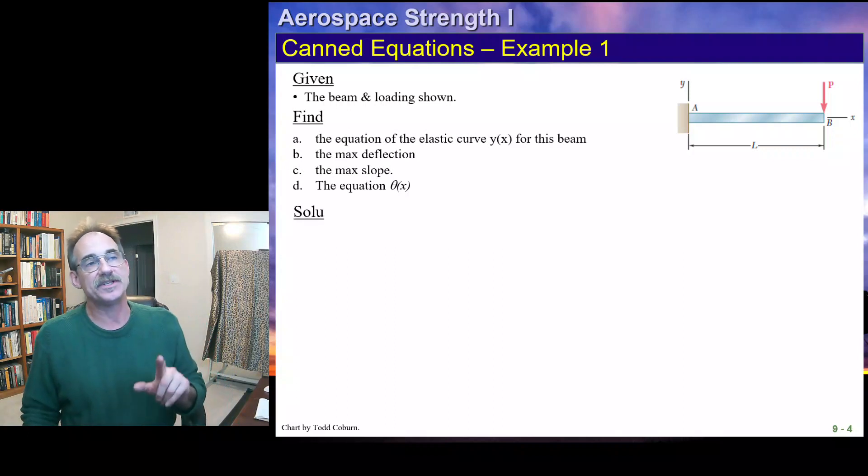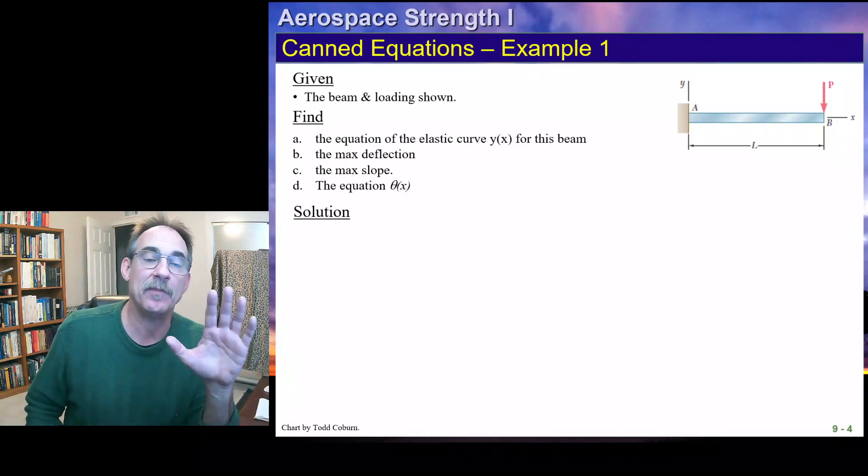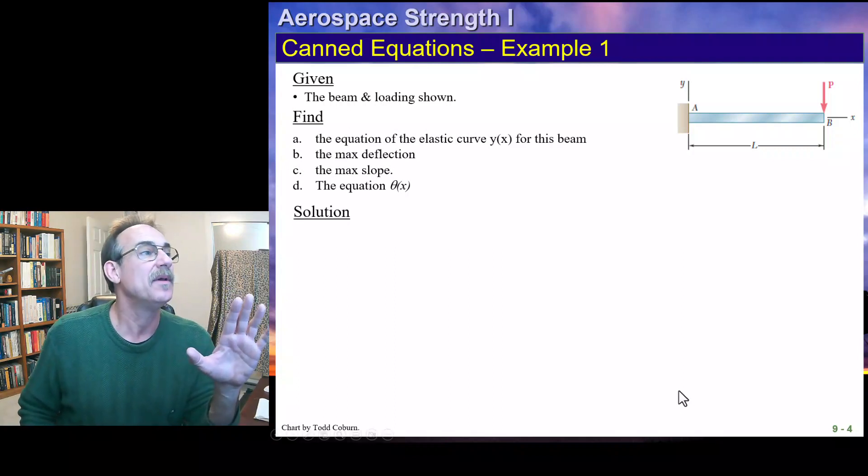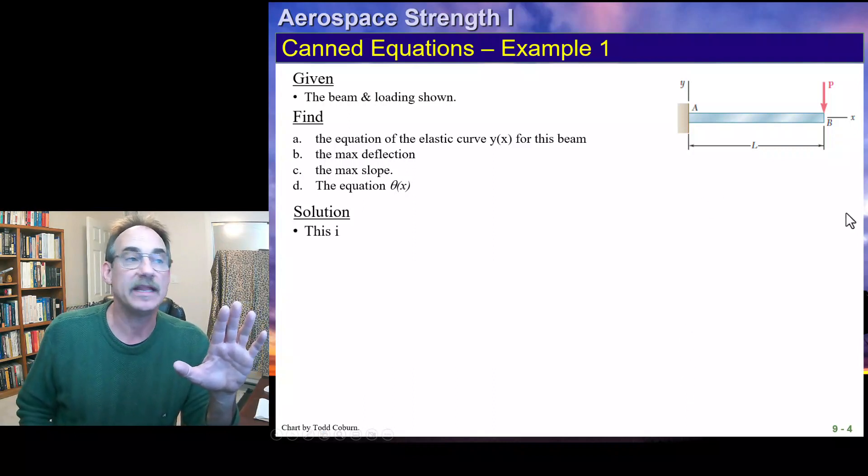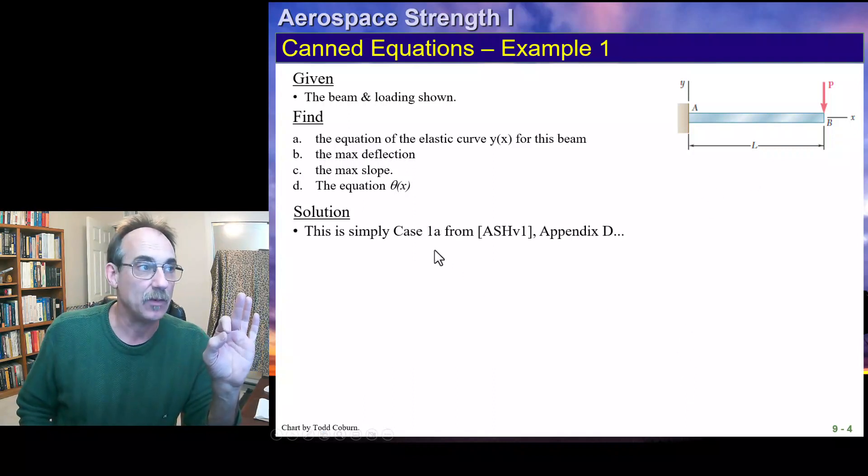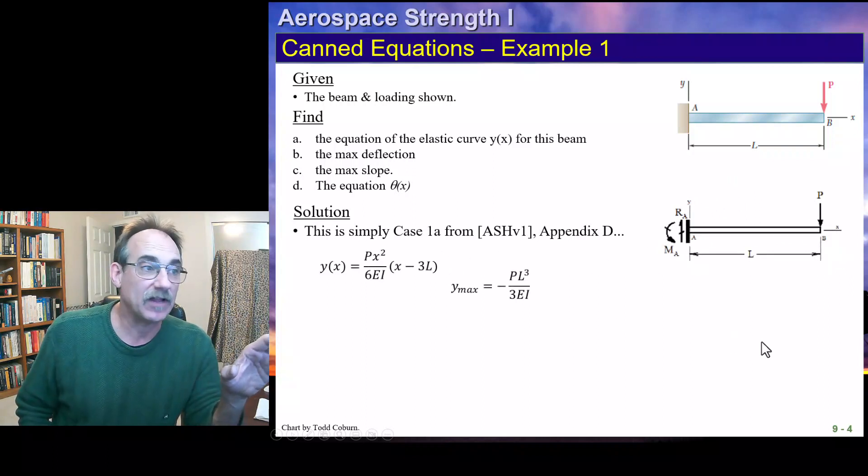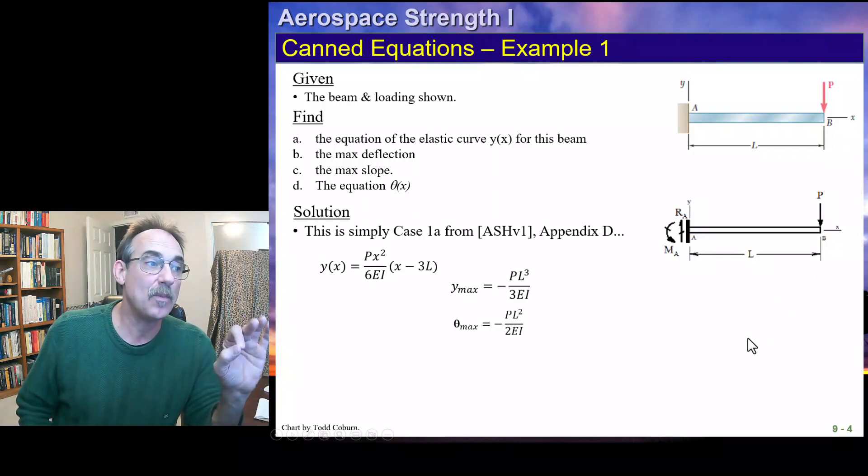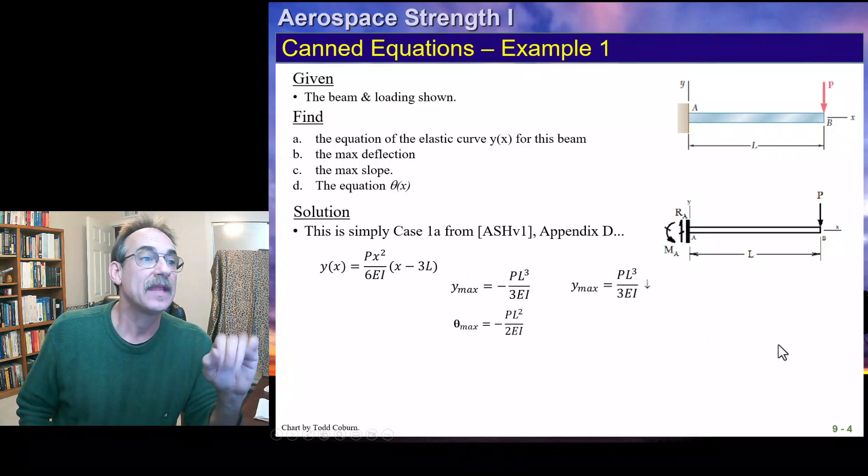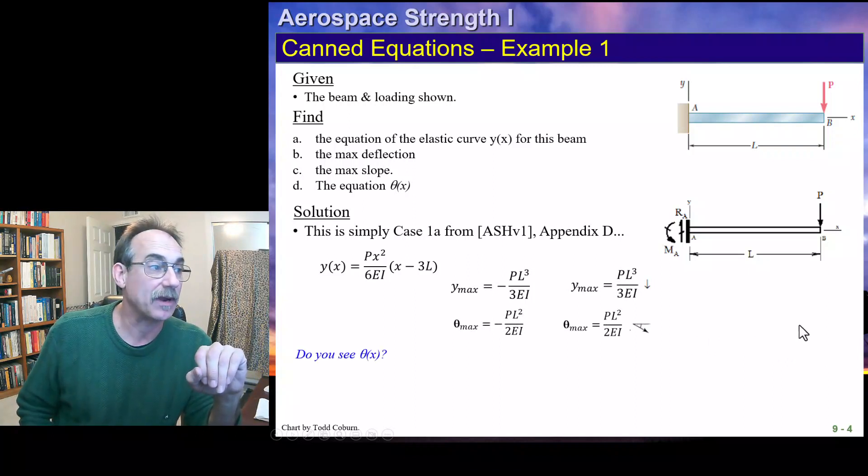Here's another example. This example is actually out of Beer and Johnson, this particular beam picture. We see once again, we're just Case 2A, which we show here. This is our deflection equation. That's the max deflection. That is the slope, or the max slope, and so on. We can actually write our result like this and box our answers.